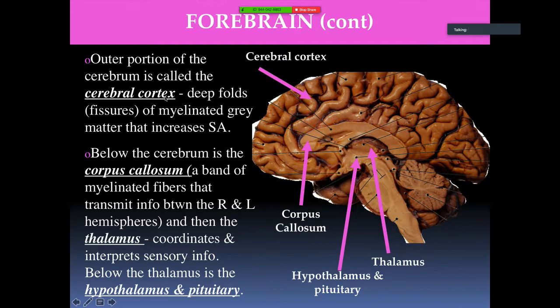The cerebral cortex is the outer portion of the cerebrum. It has deep folds that increase surface area, providing more space for neurons. Below the cerebrum is the corpus callosum — a band of myelinated fibers that transmits information between the right and left hemispheres, functioning like a bridge connecting the two sides.